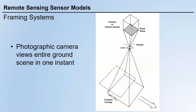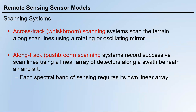Besides framing systems, we have scanning systems. They are different from framing systems because they scan the area of interest pixel by pixel or line by line. Under scanning systems, there are two subcategories. The first is called across-track scanning or whisk broom scanning, which scans the terrain along scan lines using a rotating or oscillating mirror.